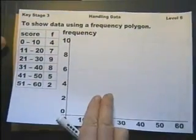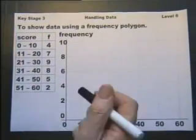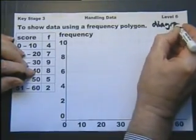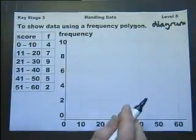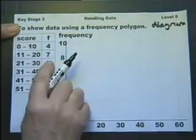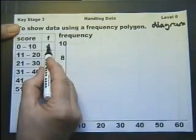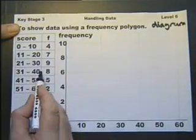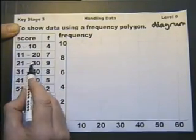Now let's look at a frequency polygon. Sometimes called a frequency diagram. Frequency polygon. Frequency diagram. Same thing. So we've got a table of information. Four people scored between 0 and 10. Seven people scored between 11 and 20. Nine people scored between 21 and 30.